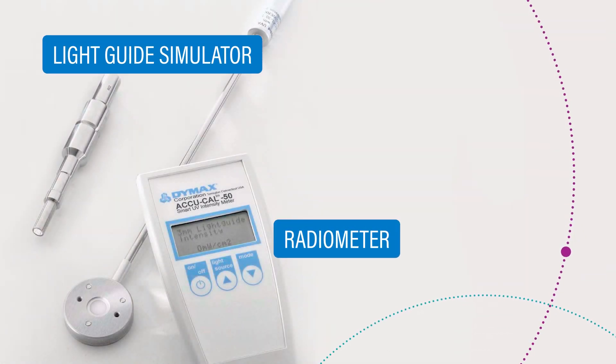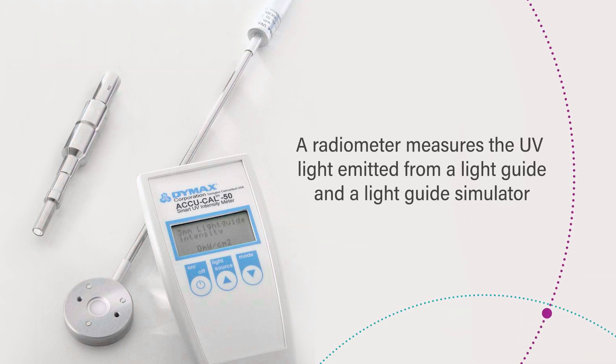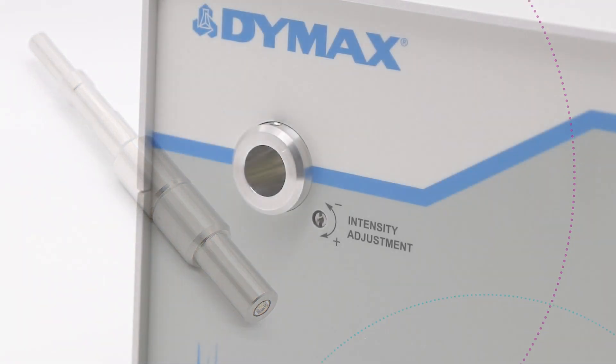A radiometer measures the UV light emitted from a light guide and a light guide simulator. The simulator is a precision optical tool that substitutes for the light guide to allow direct intensity readings from a light curing lamp.